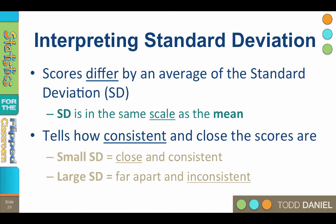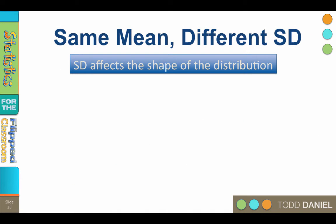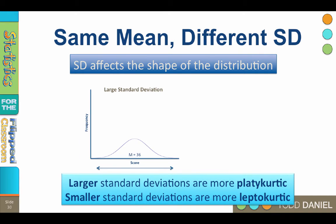The standard deviation tells us how consistent and close the scores are. A small standard deviation means that the scores are close and consistent. A large standard deviation means that the scores are far apart and inconsistent. The standard deviation also affects the shape of the distribution. Larger standard deviations are more platykurtic — the scores are more spread out. Smaller standard deviations are more leptokurtic — the scores are closer together.